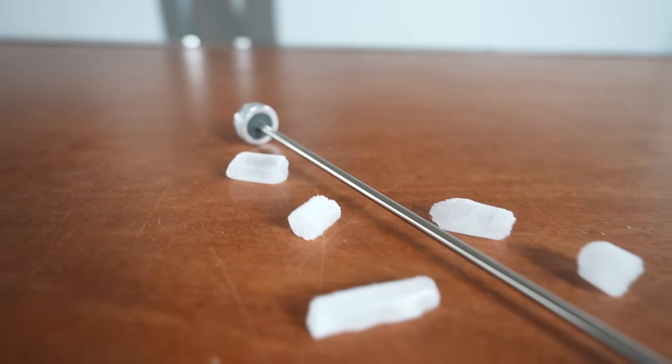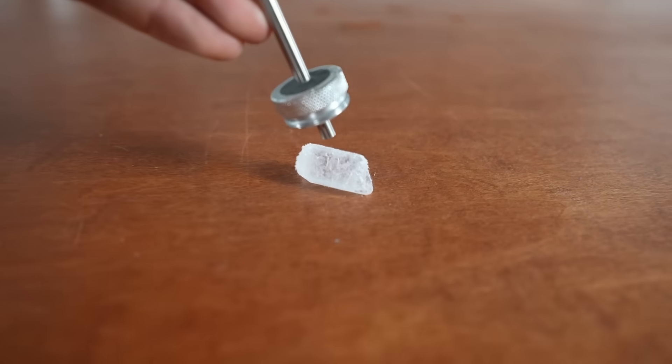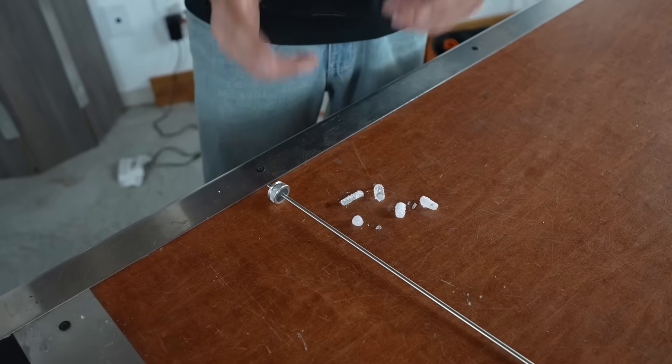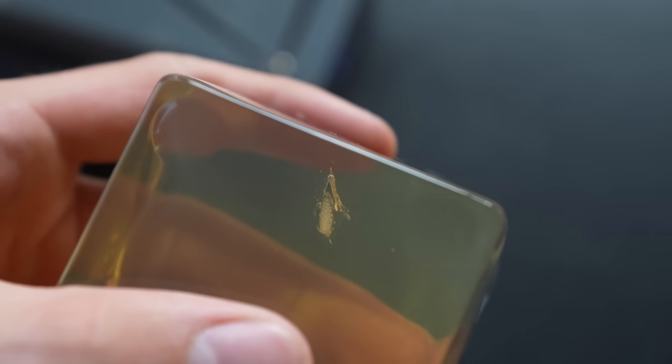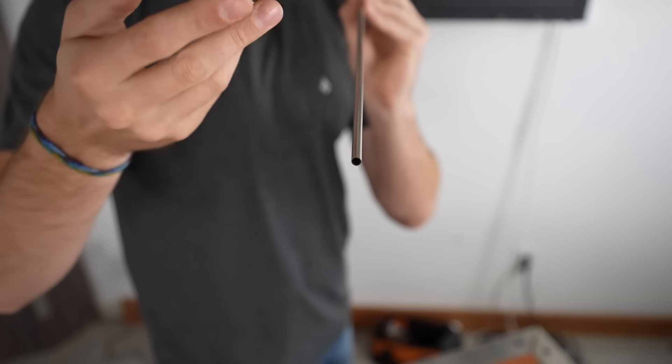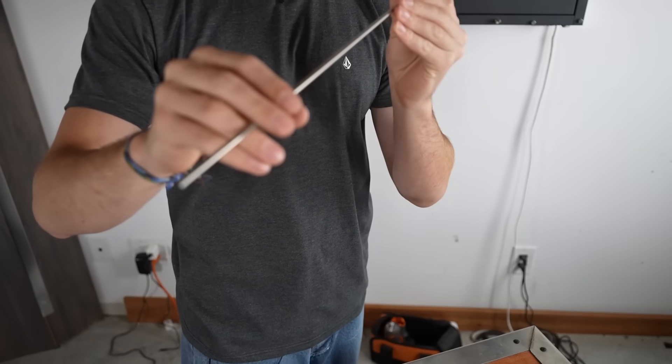The plan is to chill the barrel down as cold as possible so the ice ammo doesn't start melting the second it's loaded. Not only will I have more time to work with the ammo before it melts but I also think the ice will shoot straighter since it won't be a different size when it leaves the barrel. It's not going to be spinning out of control right when it leaves.